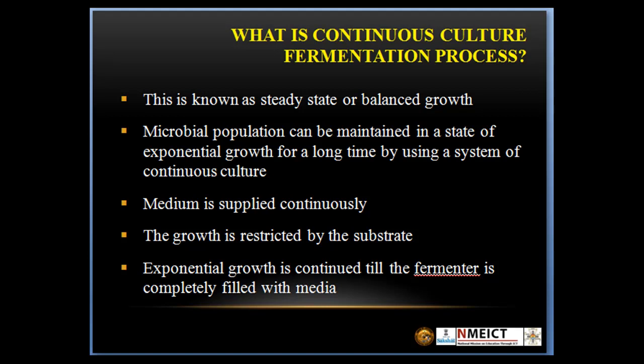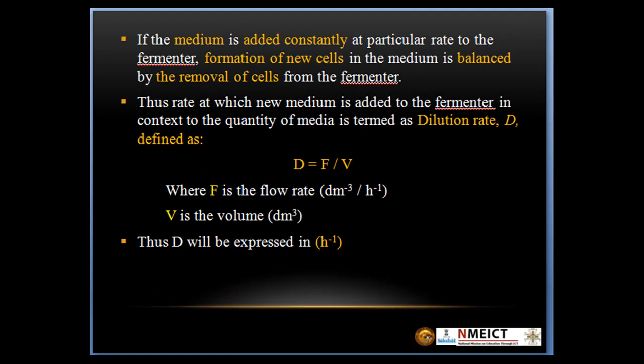What is Continuous Culture Fermentation Process? This is known as a steady state or balanced growth. Microbial population can be maintained in a state of exponential growth for a long time by using a system of continuous culture. Medium is supplied continuously, and the growth is restricted by the substrate, with exponential growth continued until the fermenter is completely filled with media.